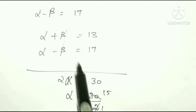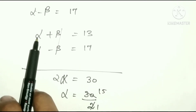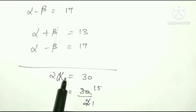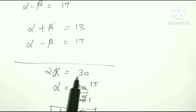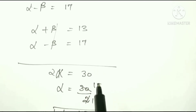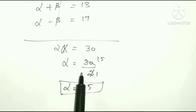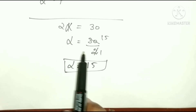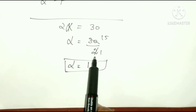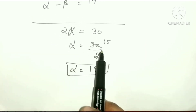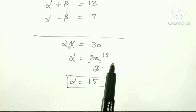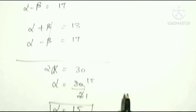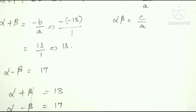Using the elimination method, we add the two equations. Alpha plus beta equals 13 and alpha minus beta equals 17. Adding them, 2 alpha equals 30, so alpha equals 15.